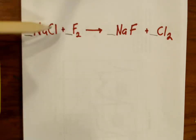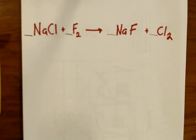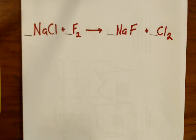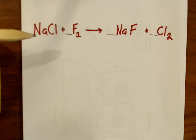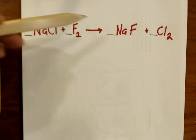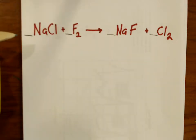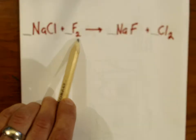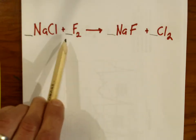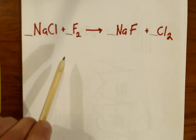If at one point throughout balancing this equation I decide that a two belongs here, I'm allowed to change my mind later on and change it to a four or a six or whatever the case may be. That's all you're allowed to do — place coefficients in these spaces here or change them. You cannot alter the formulas.